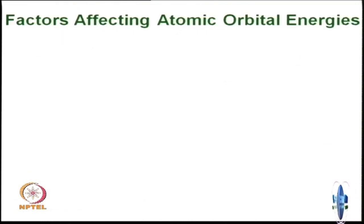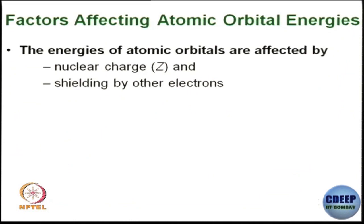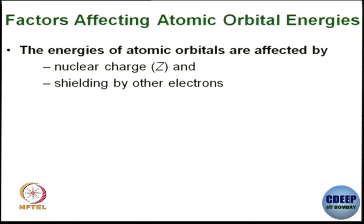The factors that affect atomic orbital energies is something we need to understand before we try to understand the periodic table. Principle quantum number-wise, 1s should have lower energy than 2s, then 3s, then 4s; and 2p lower than 3p, 4p, 5p. But there are a few factors we need to understand in detail. Atomic orbital energies are affected mainly by nuclear charge and shielding by other electrons.